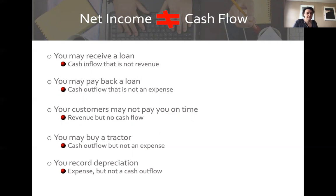With accrual accounting, if you delivered produce you might have revenue recorded, but if your customers don't pay you right away, you don't necessarily have cash in the bank. If you buy a tractor, you've made an investment — you have a cash outflow but not an expense. And if you record depreciation, it's a non-cash expense, so you'll see the expense on your income statement but won't have the cash outflow. It's really important to look at both income and cash flow because they're both equally important. You need to be tracking both, but recognizing that one is not the other.